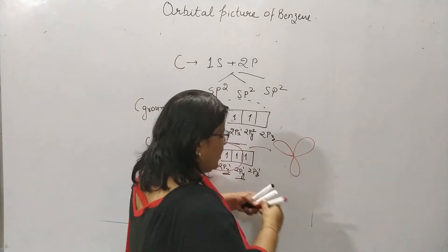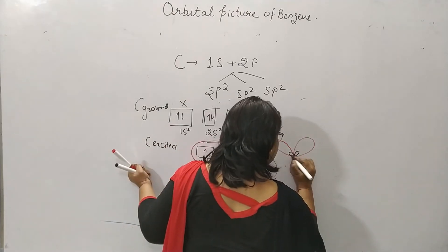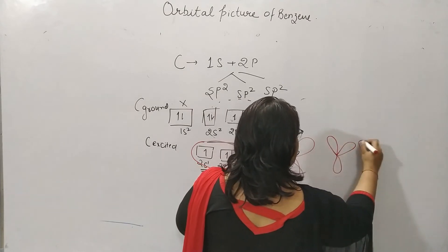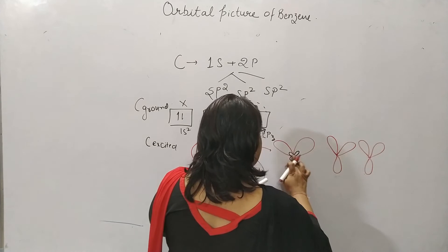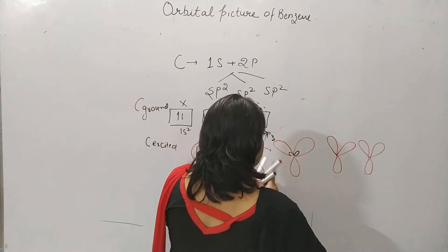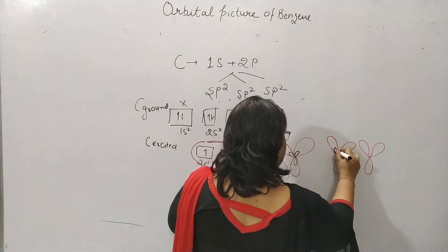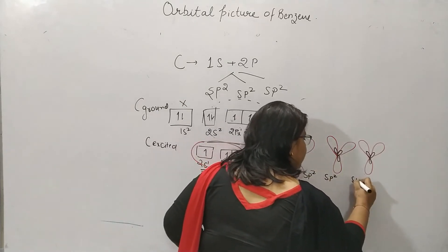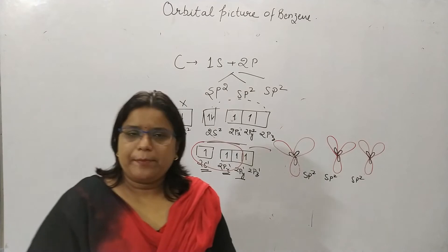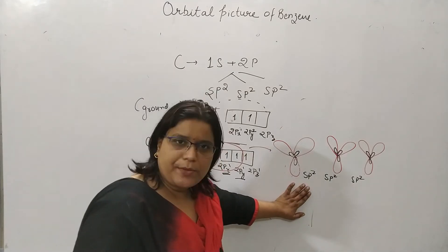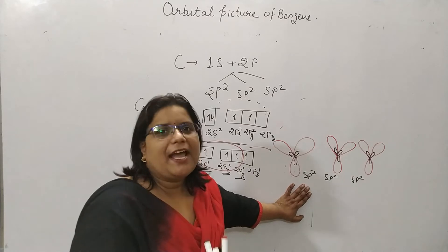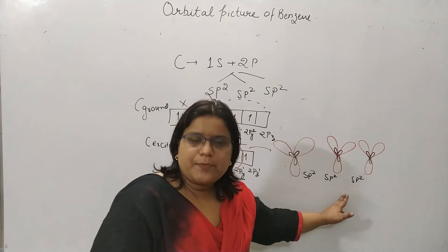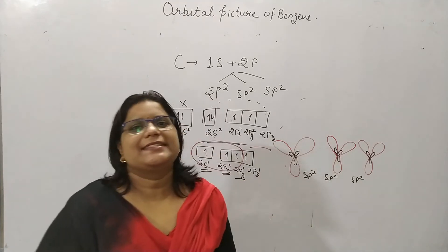These 3 sp2 hybridized orbitals are formed for each carbon. One sp2 hybridized orbital will connect with the 1s orbital of the hydrogen atom, and the remaining 2 sp2 hybridized orbitals of the carbon are co-axially overlapping with neighboring carbons.